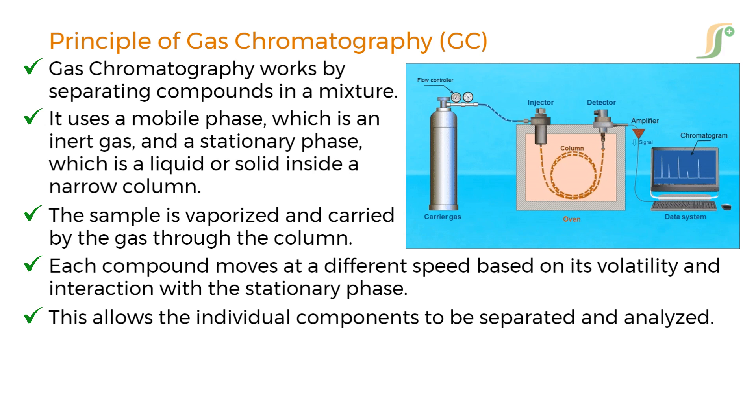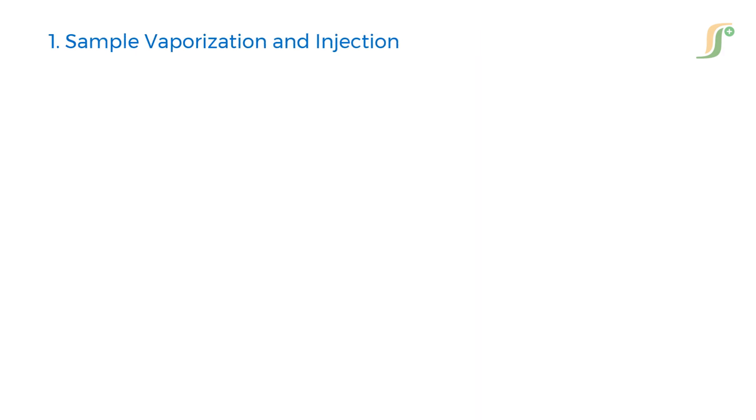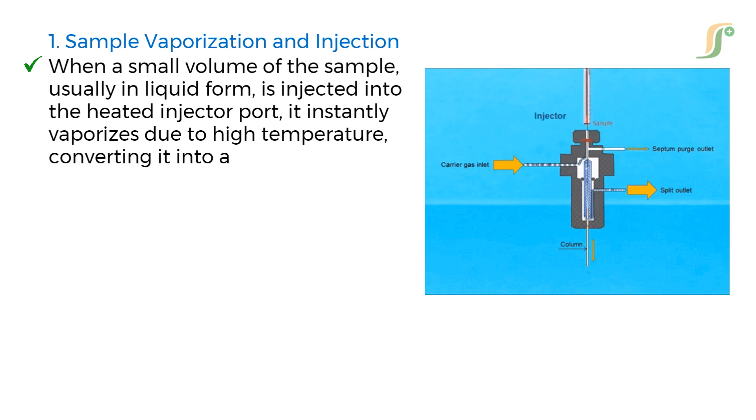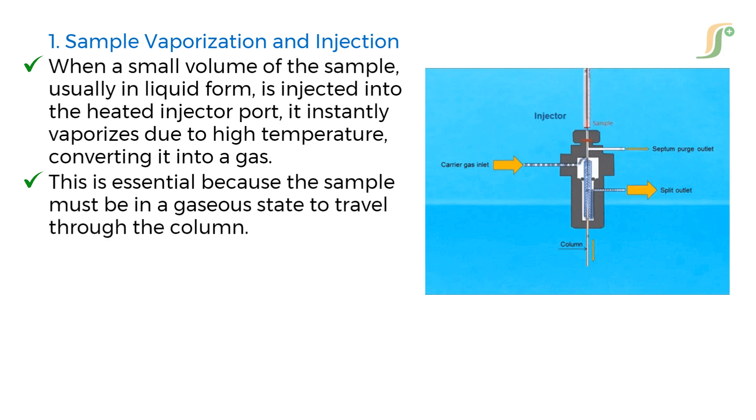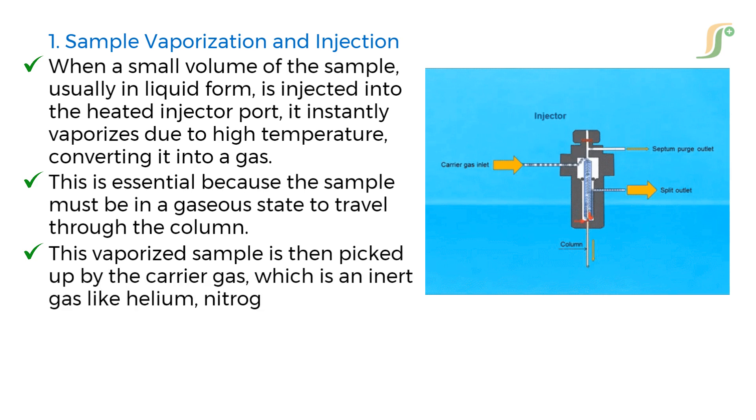Here's how it works step by step. Sample vaporization and injection. When a small volume of the sample, usually in liquid form, is injected into the heated injector port, it instantly vaporizes due to high temperature, converting it into a gas. This is essential because the sample must be in a gaseous state to travel through the column. This vaporized sample is then picked up by the carrier gas, which is an inert gas like helium, nitrogen, or hydrogen, and it acts as the mobile phase.